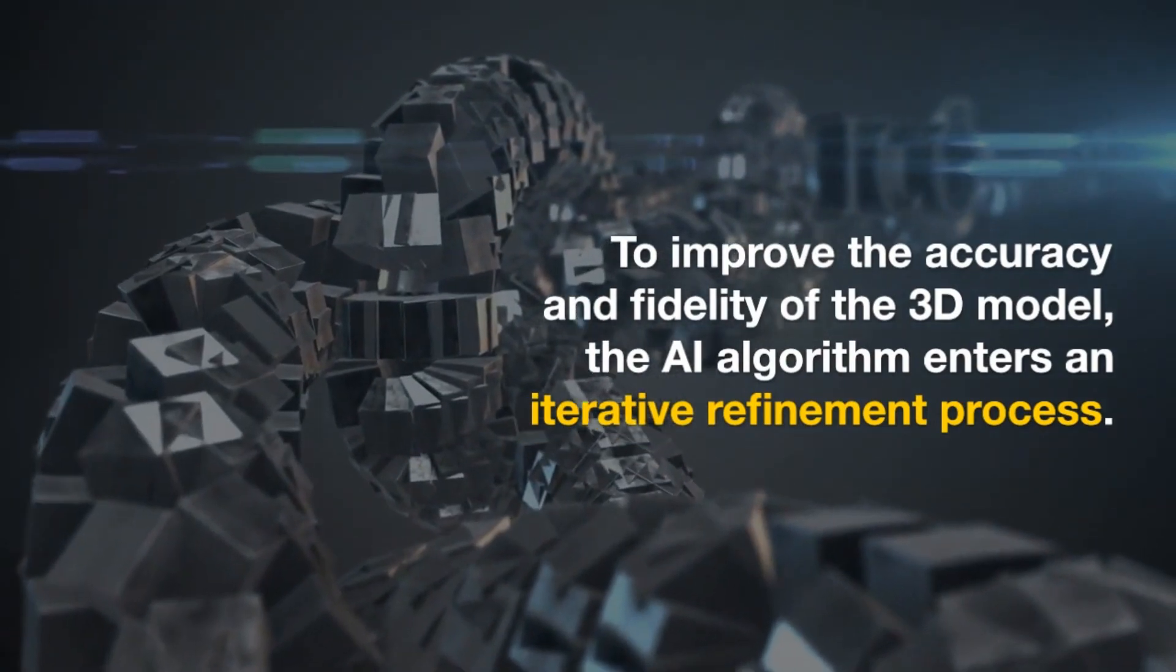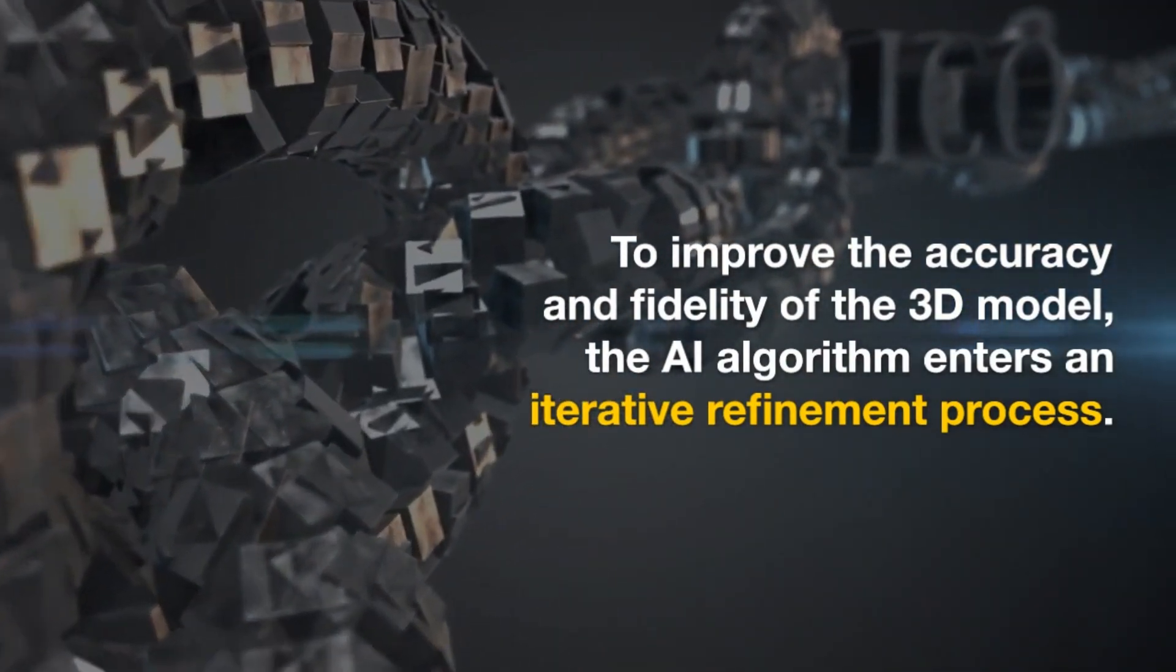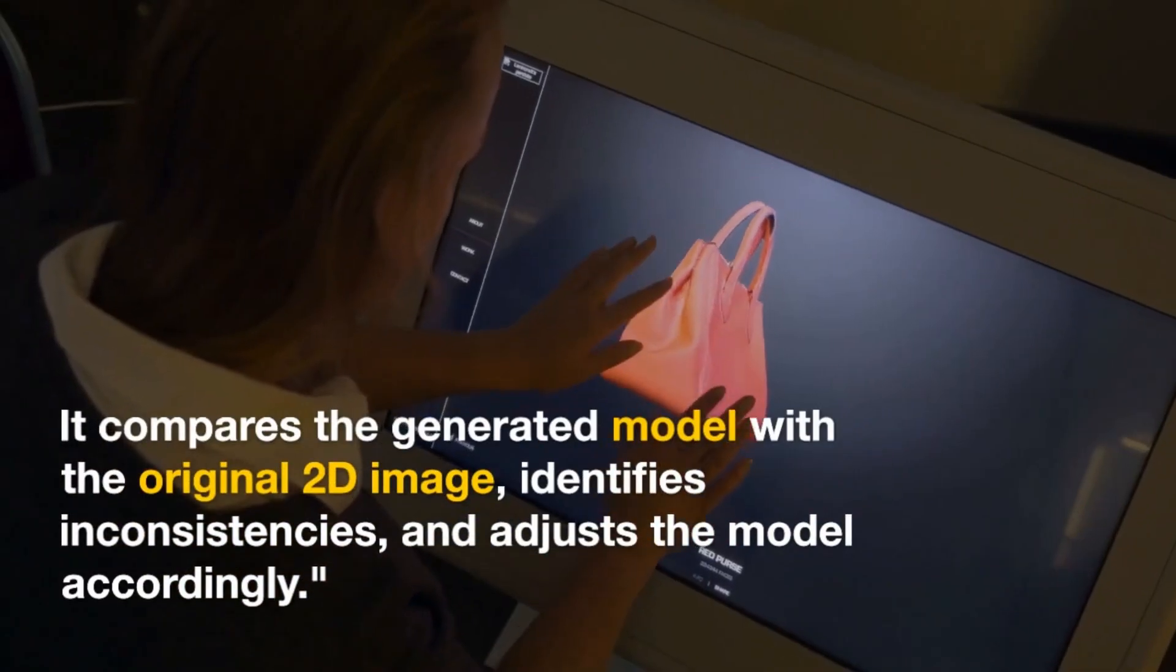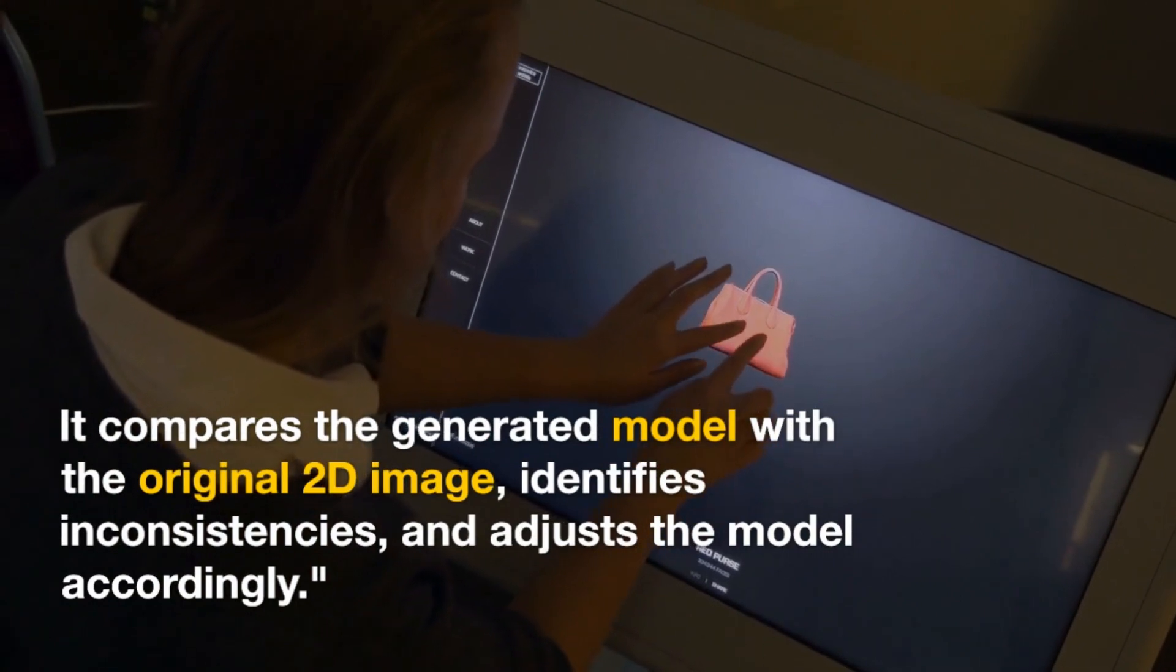To improve the accuracy and fidelity of the 3D model, the AI algorithm enters an iterative refinement process. It compares the generated model with the original 2D image, identifies inconsistencies, and adjusts the model accordingly.